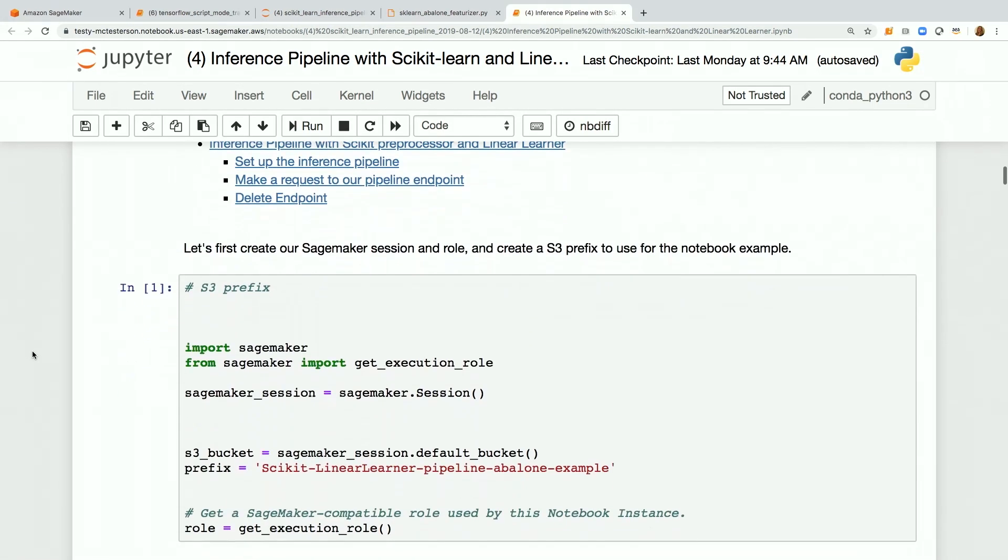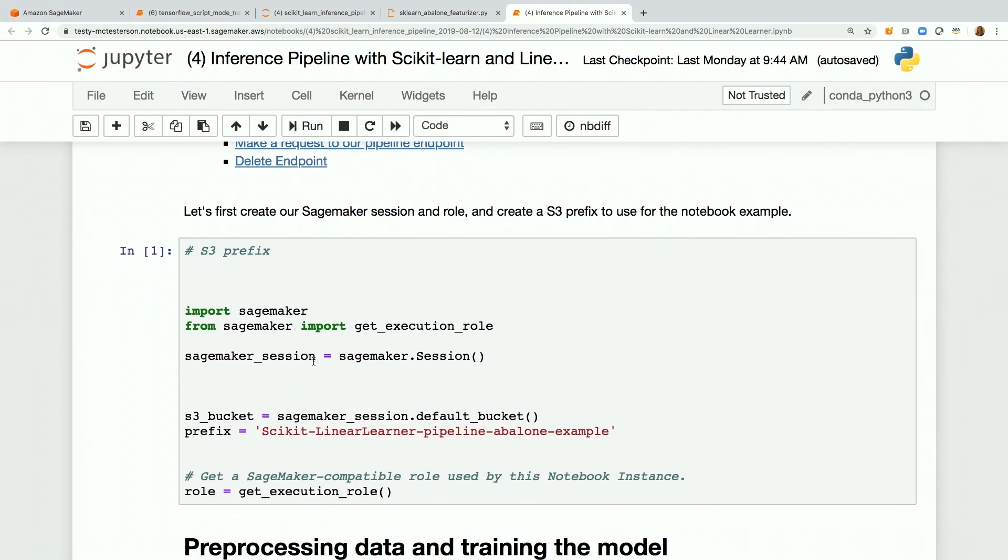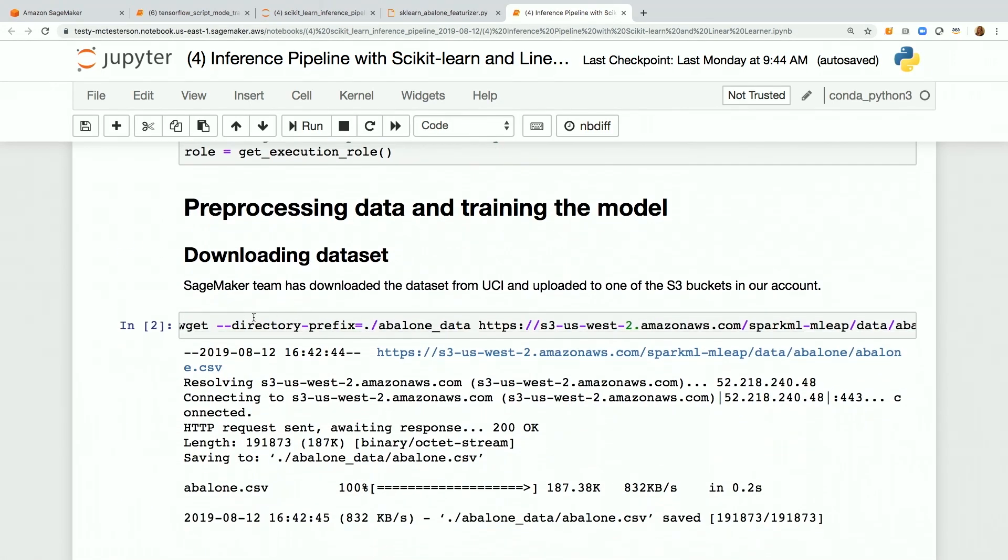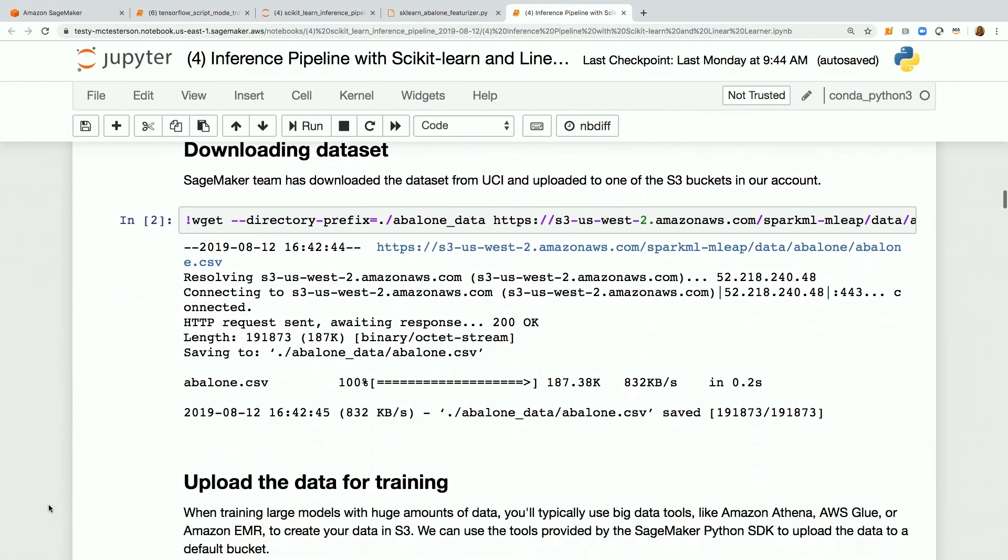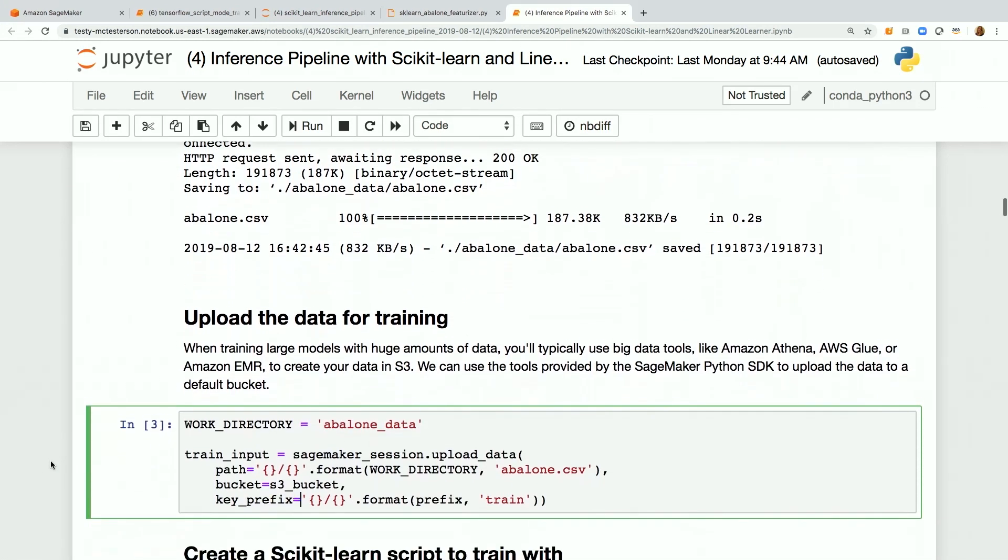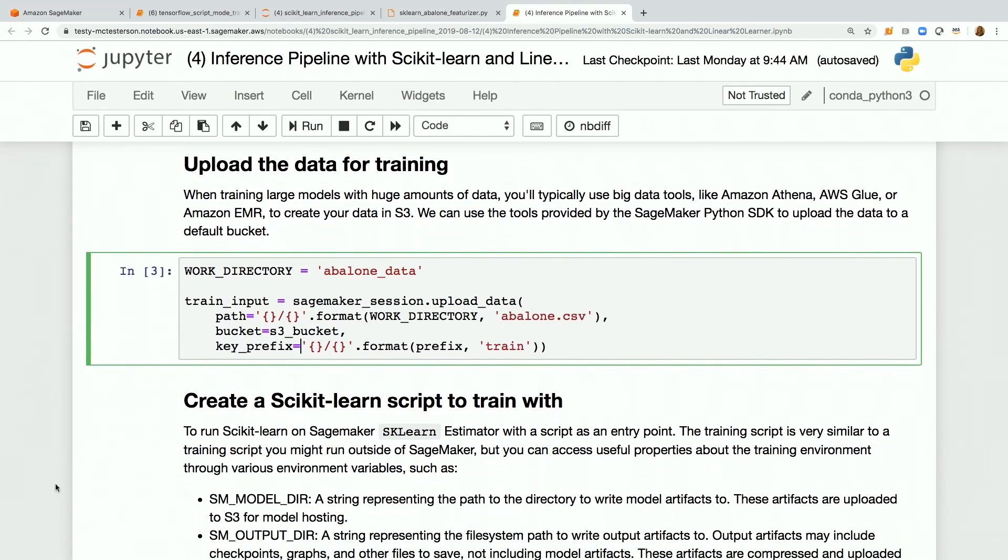This is an inference pipeline that we're going to set up with first a scikit-learn transformer and then a linear learner model, and both of those are going to be stuck together. This should look very familiar to you - SageMaker session, default buckets. Then we're going to do some preprocessing. We'll download this data set here, the seashell abalone data set. We'll specify our working directory.